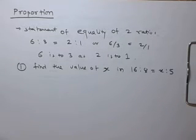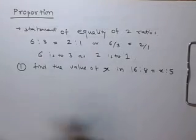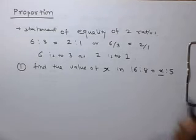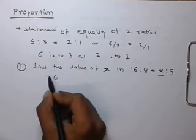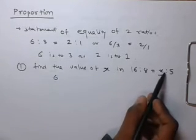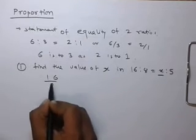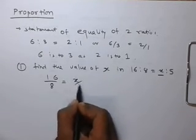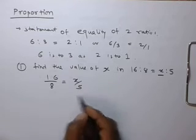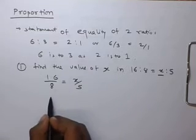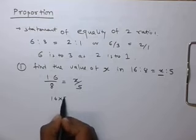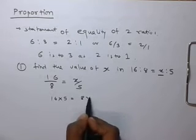By using the statement of equality of two ratios, it means proportion, we can calculate the value of x. 16 is to 8 equals to x is to 5 can be written as 16 by 8 equals to x by 5. Upon cross multiplication, it will be 16 cross 5 equals to 8 cross x.